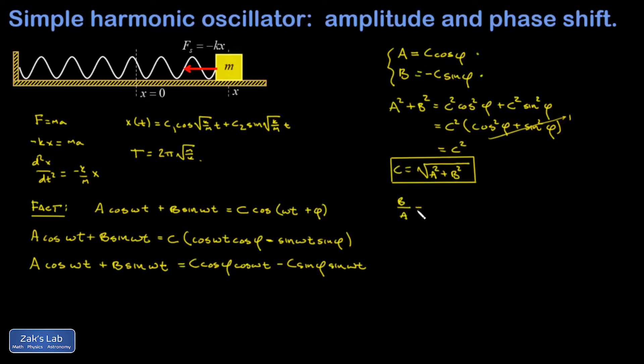So I have b over a equals negative tangent φ, multiply both sides by negative one and invert the tangent function, and my phase angle is the inverse tangent of negative b over a.